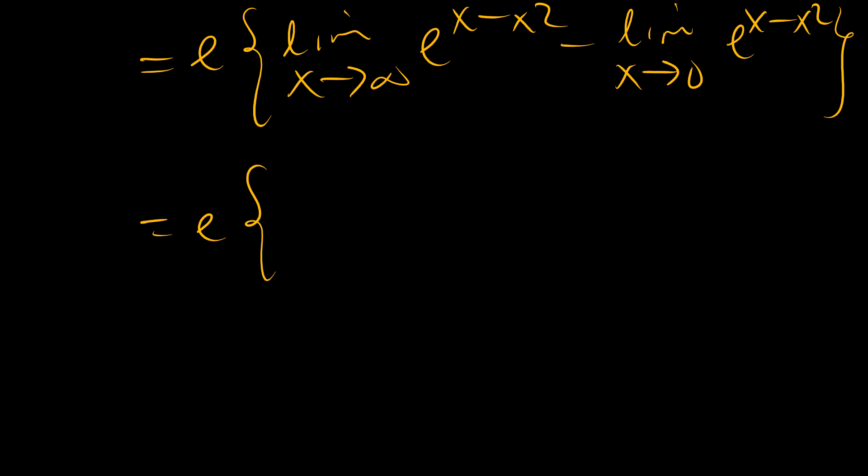So that means that we have e limit as x tends to infinity of e to the x minus x squared minus limit as x tends to 0 of e to the power of x minus x squared. Now this is very interesting. We have the limit as x tends to infinity of the derivative of e to the power of x minus x. Limit as x tends to 0, this just becomes e to the power of 0, which is 1.